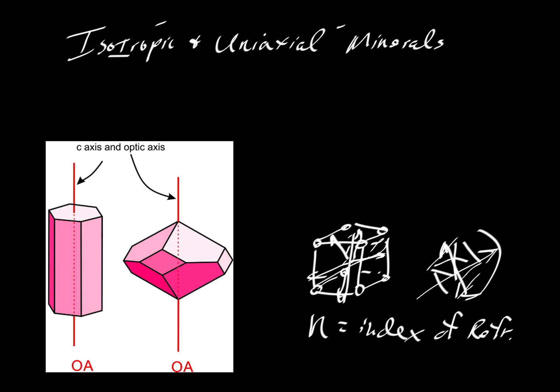Here we have this diagram from Dexter Perkins' online mineralogy textbook, and he shows the case for minerals that are uniaxial. What does that mean? It means that they have a distinct direction where the N value will move either fast or slow in one direction and be faster or slower than another.